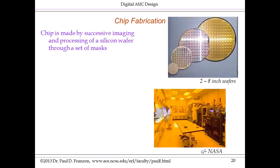I'm not going to go through the complete chip fabrication flow, though many of you are familiar with the basic concepts here. The idea is that a chip is made by successively imaging a set of masks onto a silicon wafer, so as to define the different functions that go into making a semiconductor circuit.